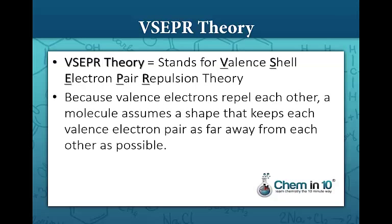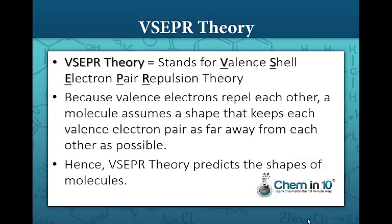VSEPR theory is based on the fact that valence electrons repel each other because they are like charges. So a molecule assumes a shape that keeps each valence electron pair as far away from each other as possible. Hence VSEPR theory predicts the shapes of molecules.